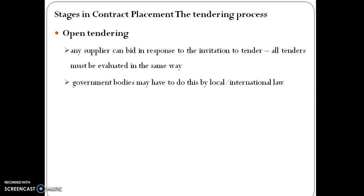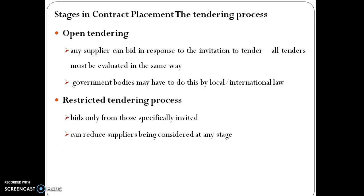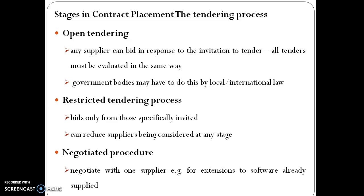Stages in contract placement — the tendering process. Open tendering: any supplier can bid in response to an invitation to tender, and all tenders must be evaluated in the same way. Government bodies may be required to do this by local or international law. Restricted tendering: bids only from those specifically invited. Negotiated procedure: negotiate with one supplier.